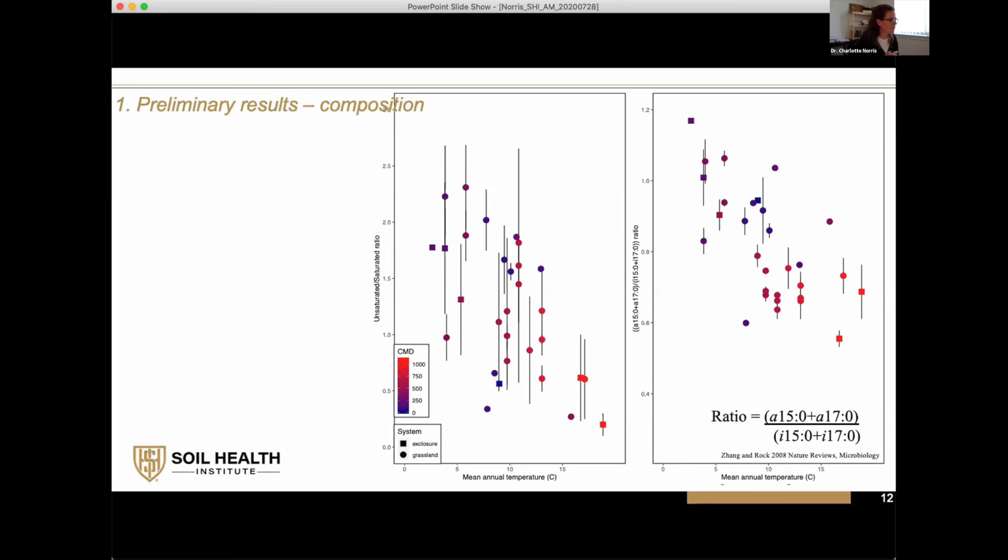That's what we're looking at. That's what the unsaturated to saturated ratio is. This isn't a new idea; it's present within the community. What we're finding is that we've got a decrease with mean annual temperature compared to the unsaturated to saturated ratio.